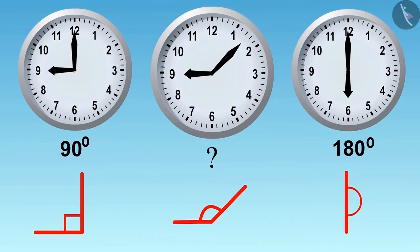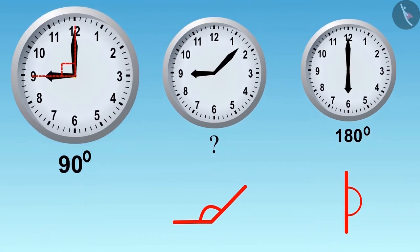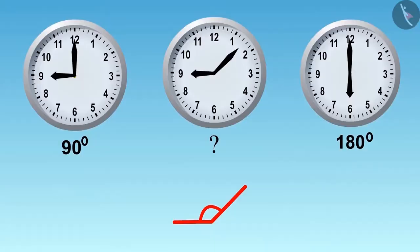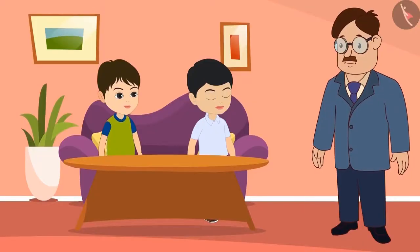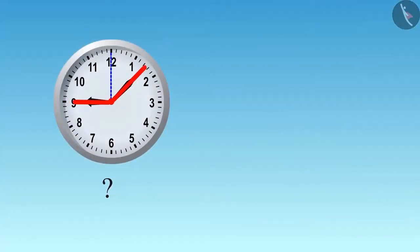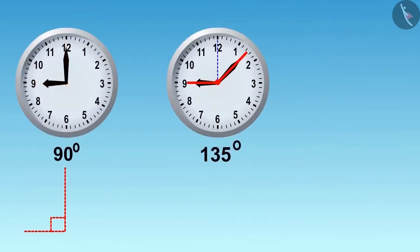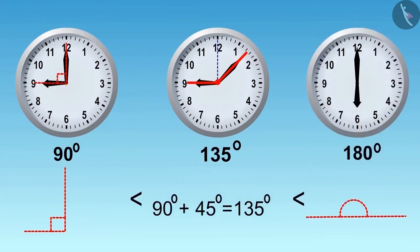It looks like greater than ninety degrees and less than one hundred eighty degrees. You identified it correctly, Golu. This is an angle of one hundred and thirty-five degrees. This is greater than ninety degrees, but less than one hundred and eighty degrees.